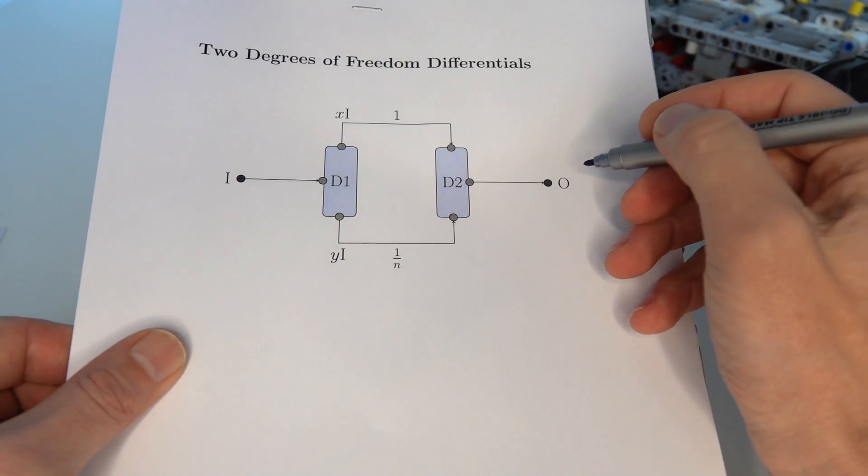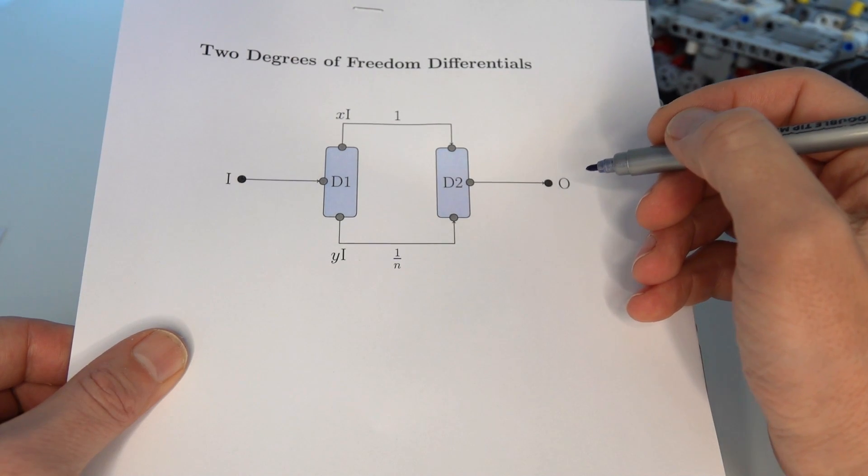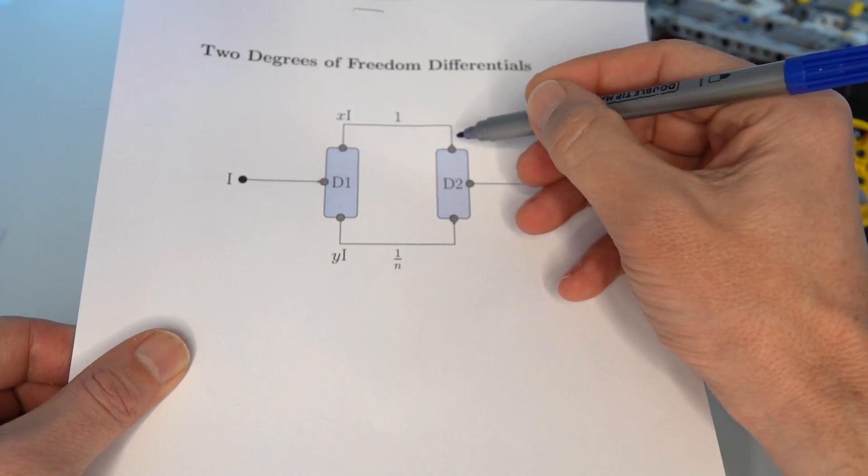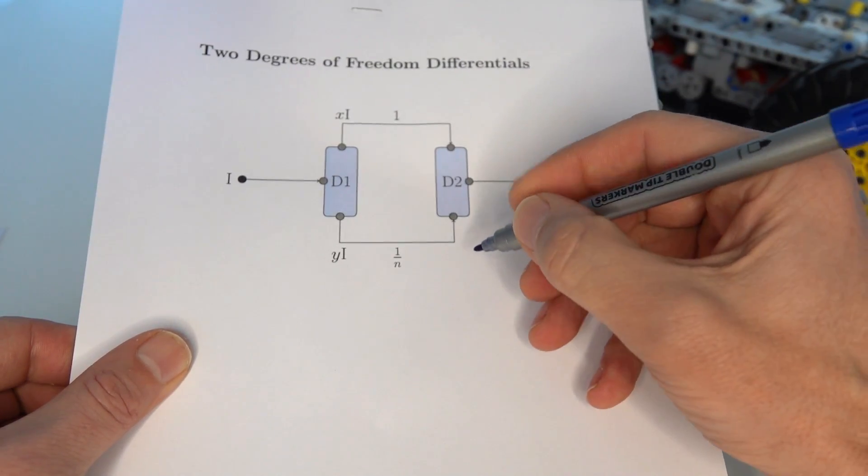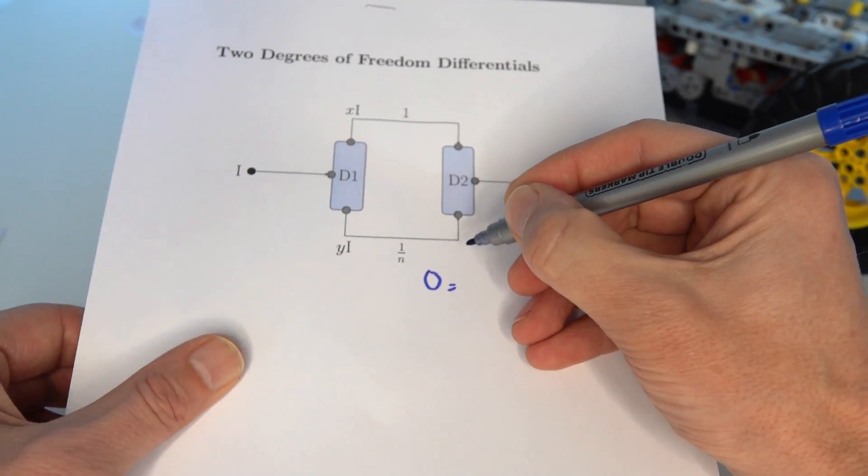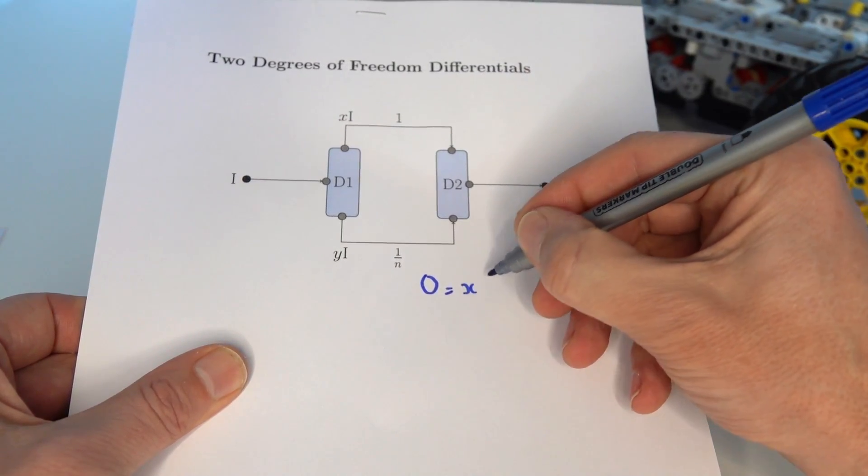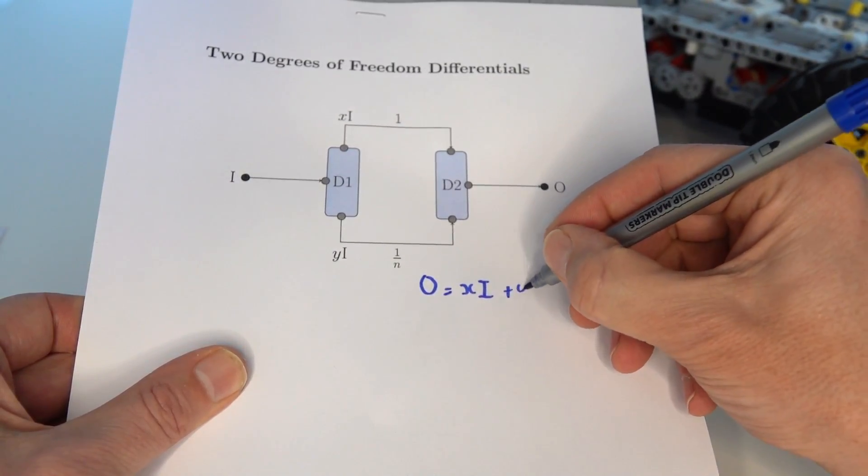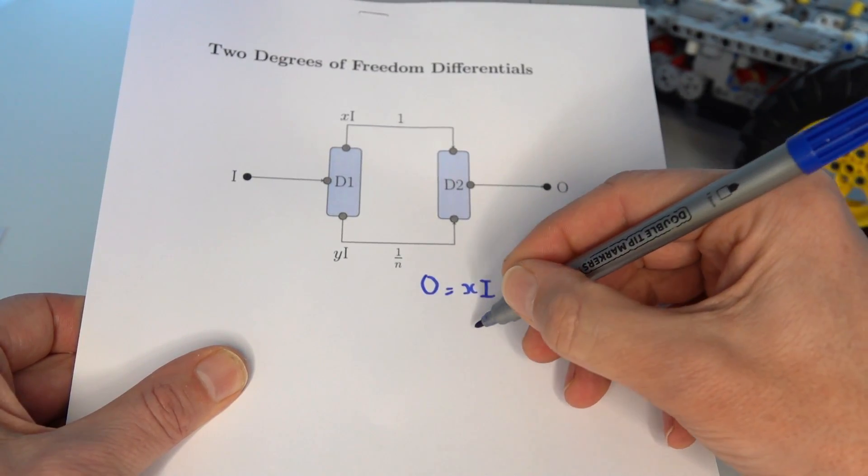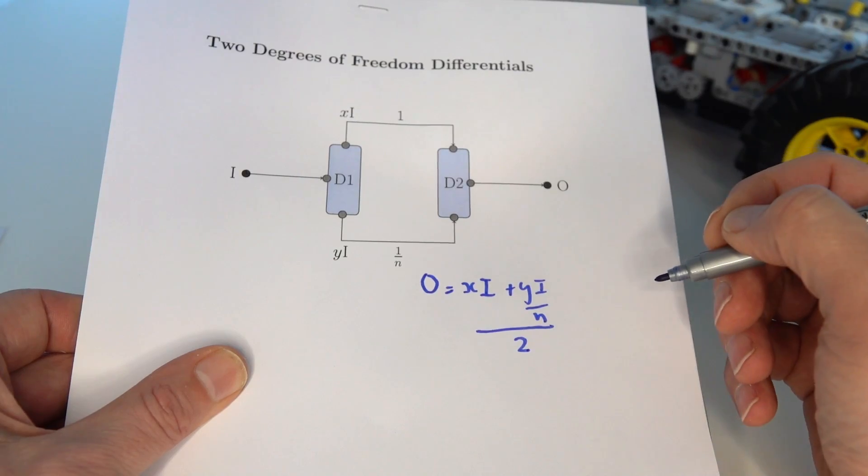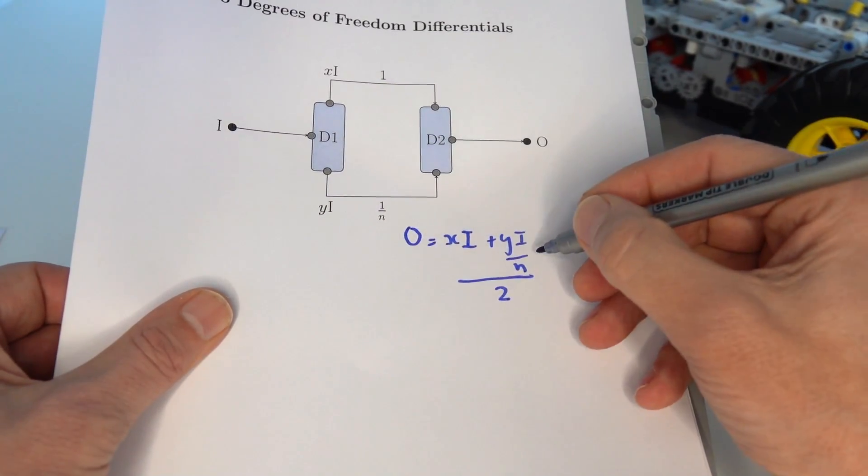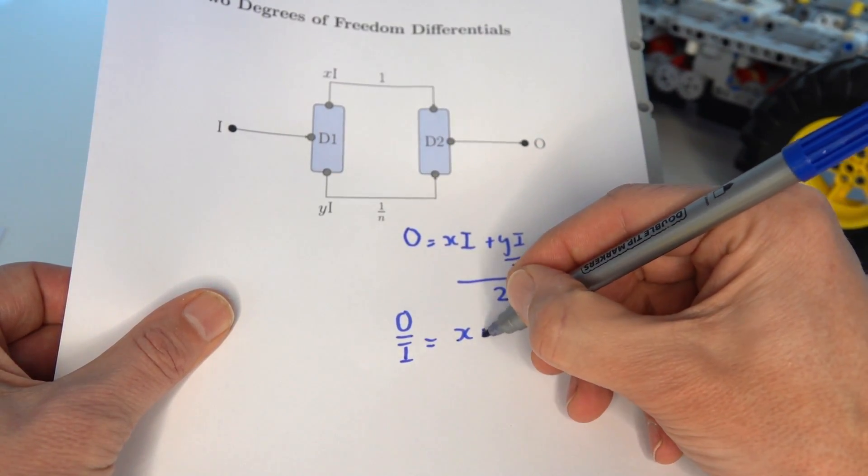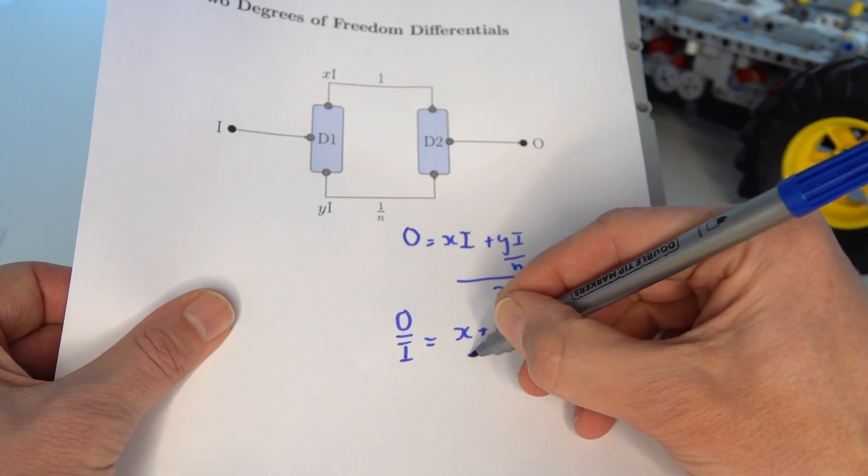So in order to analyze this diagram what we're trying to do is find out the output to input ratio. So we can start with this differential here, we know that from the relationship of a differential the output is given by the average of the two inputs so in this case the output O is going to be given by the average of input 1 which is xi plus the second input which is yi divided by n, so yi over n, and all of that divided by 2 to give the average. And from that straight away we can see that by dividing through by i we've got that the output to input ratio is equal to x plus y over n all divided by 2.